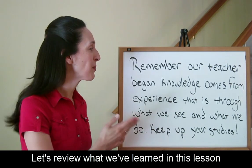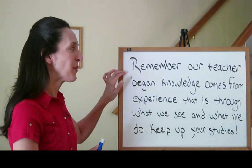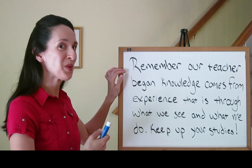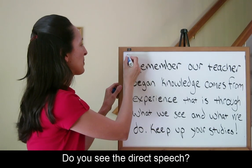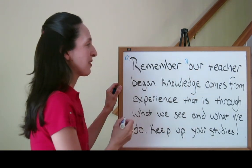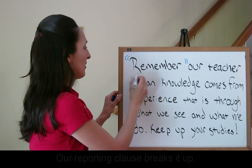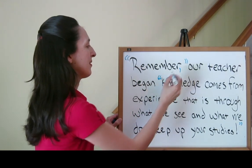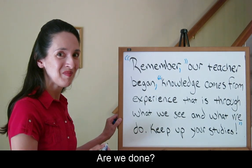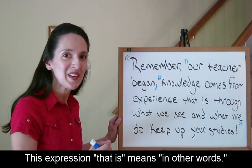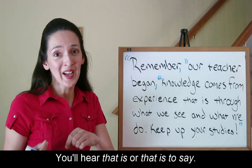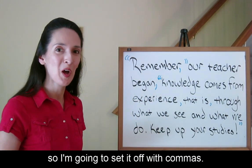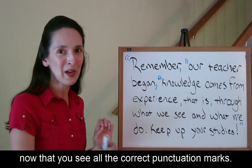Let's review what we've learned in this lesson by punctuating this last statement: 'Remember,' our teacher began, 'knowledge comes from experience, that is, through what we see and what we do. Keep up your studies.' Do you see the direct speech? Our reporting clause breaks it up. The expression 'that is' means 'in other words' — you'll hear 'that is' or 'that is to say.' It breaks the flow of my sentence, so I'm going to set it off with commas. Let's read the statement once more, now that you see all the correct punctuation marks.